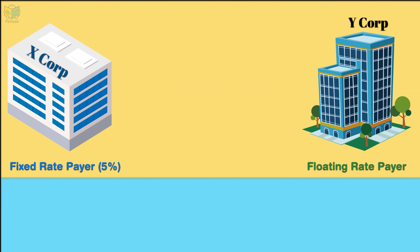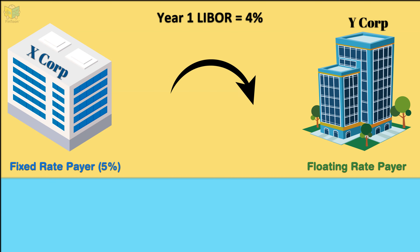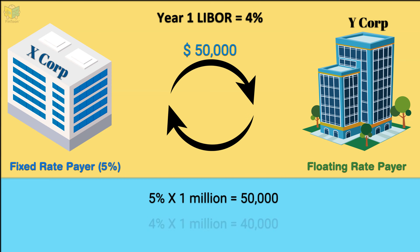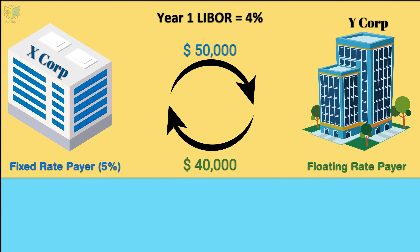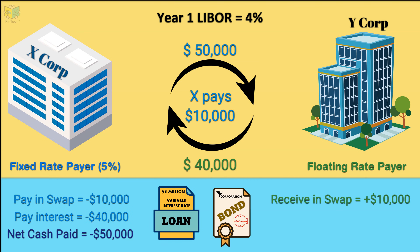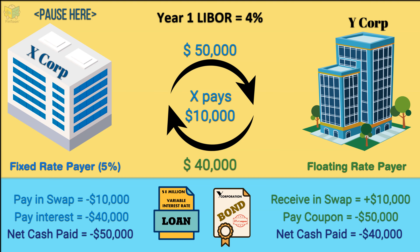Suppose during the first settlement period the LIBOR was 4%. X has to pay $50,000 to Y, and Y has to pay $40,000 to X. This payment can be netted, and X will pay $10,000 to Y, and the transaction is settled. Let us take a moment to understand the cash flow for both parties. This scenario has worked favourably for Y, as it was able to bring down the interest cost.